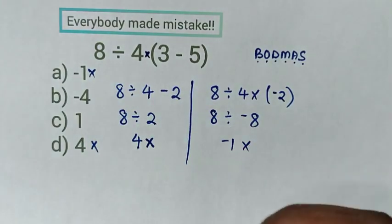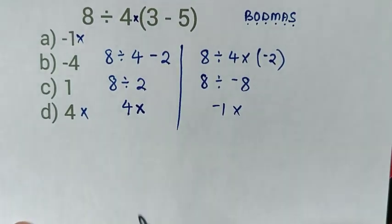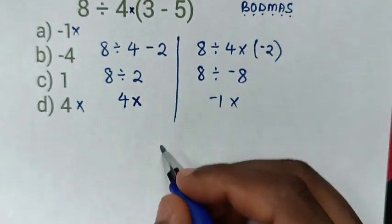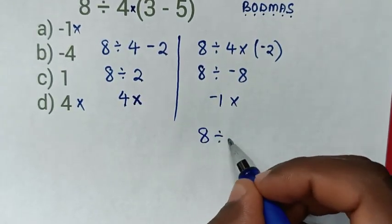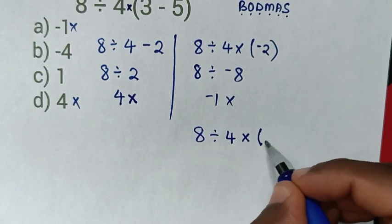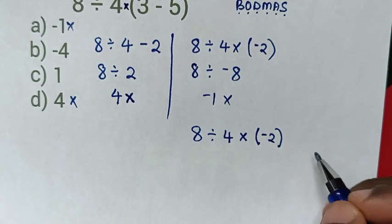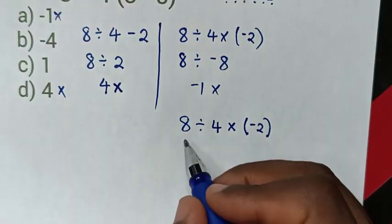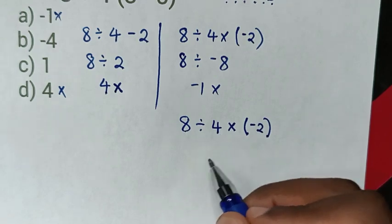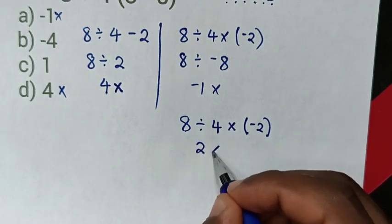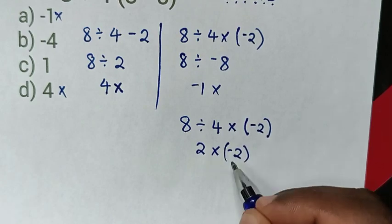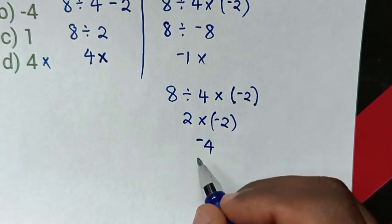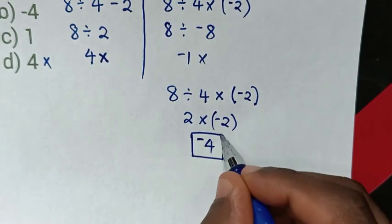The correct method: first take 3 minus 5 is negative 2. Then it will be 8 divided by 4, times bracket negative 2. Following BODMAS, we start with division first: 8 divided by 4 is 2. Then multiplication: 2 times negative 2 is negative 4. Therefore, negative 4 is the correct answer.